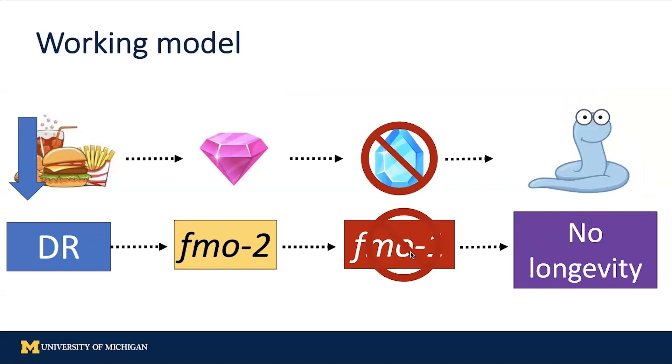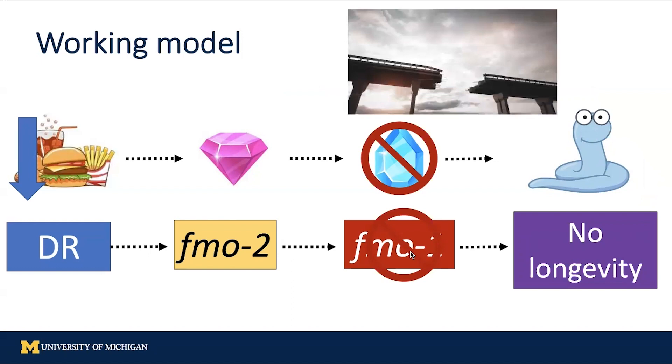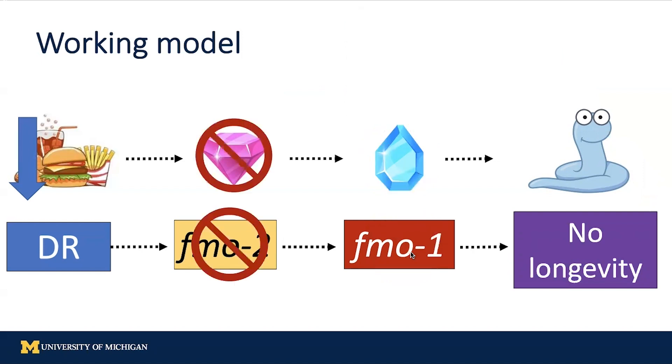You can think of this model as a bridge. If one segment of the bridge is broken, you will not be able to reach the other end. Similarly, if you now cut only FMO2, or both FMO2 and FMO1, you will not be able to reach longevity.